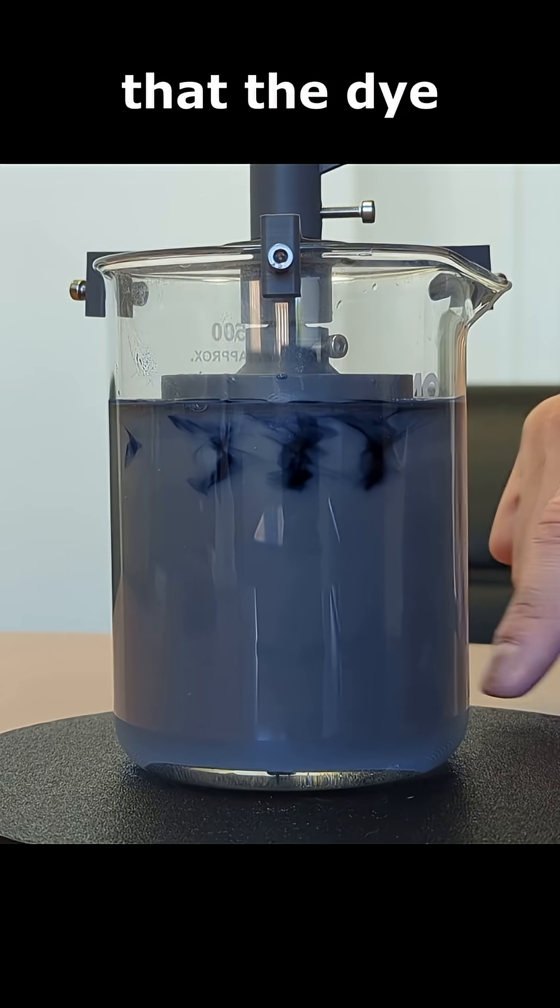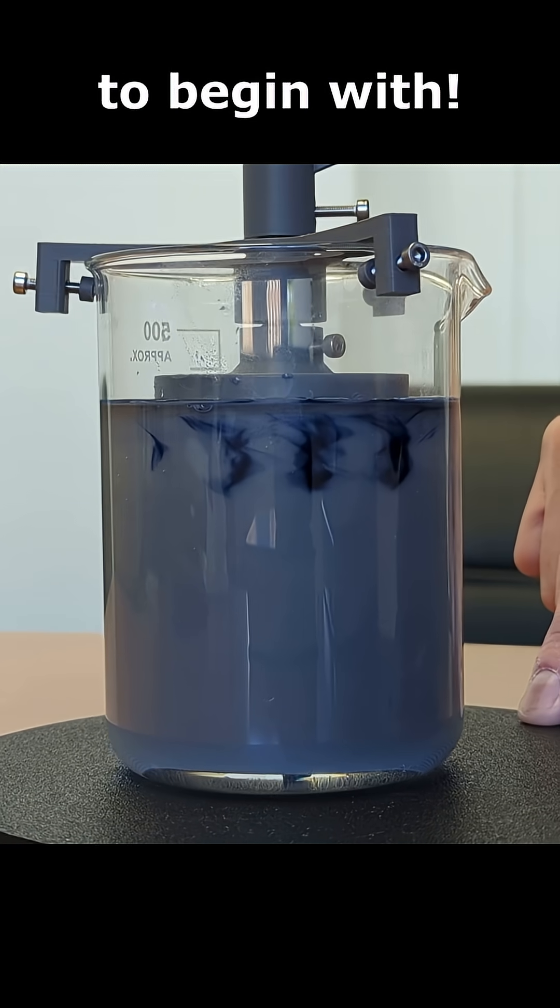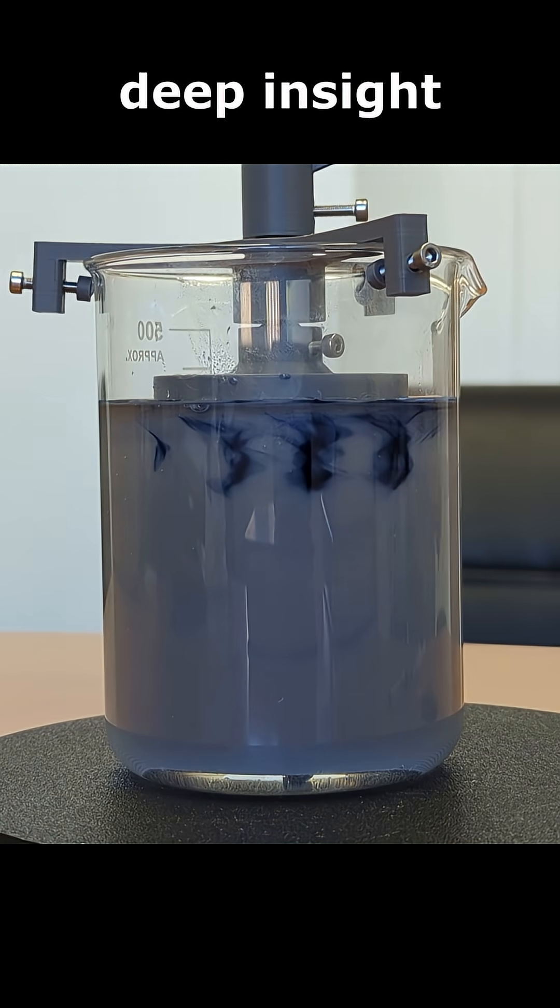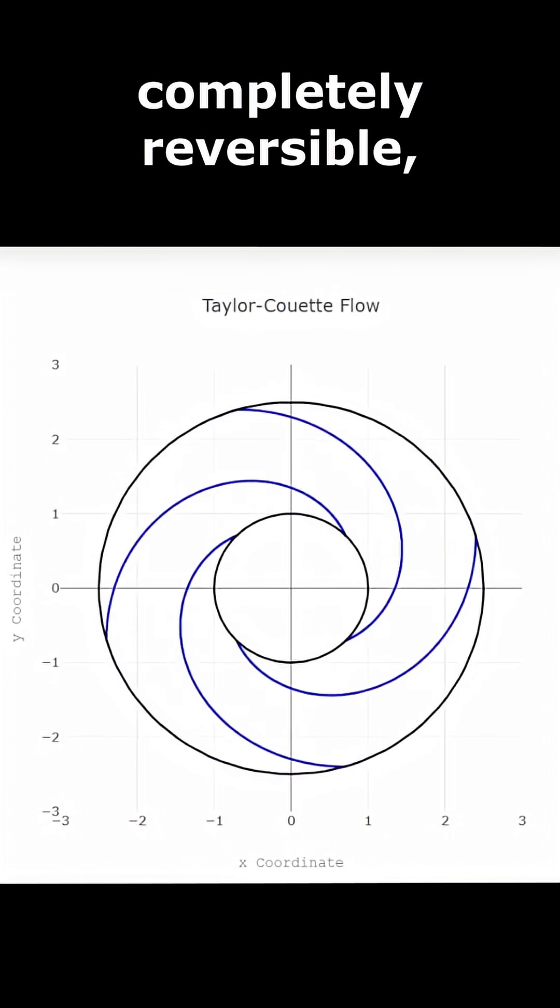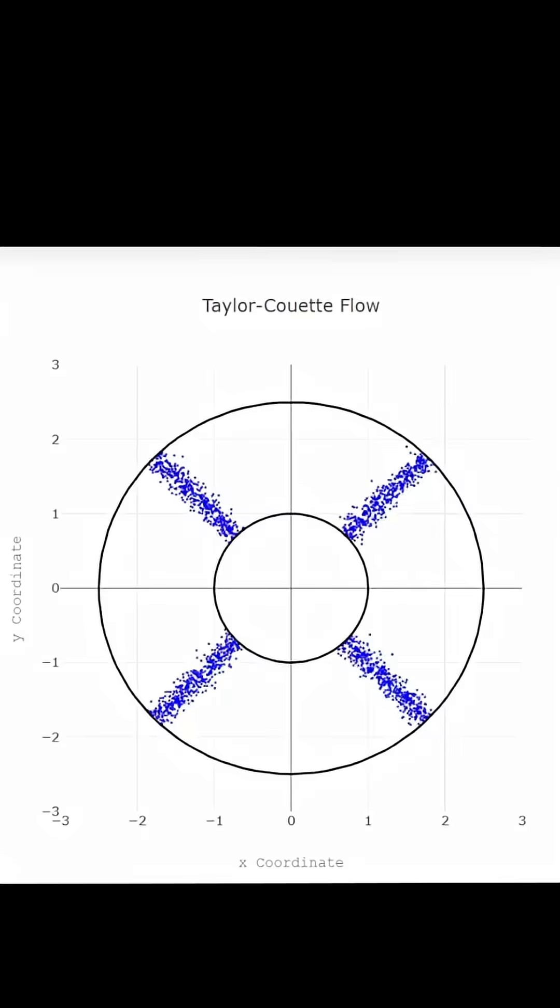So, that means that the dye never mixed to begin with. This shows some really deep insight into the fundamentals of turbulence. The process of stirring the fluid caused by a vortex is completely reversible, but the molecular diffusion isn't.